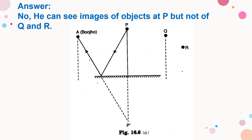From his point, Bojo can see the objects at P, but he cannot see the objects at Q and R — they are not reflecting. Bojo cannot see those images.